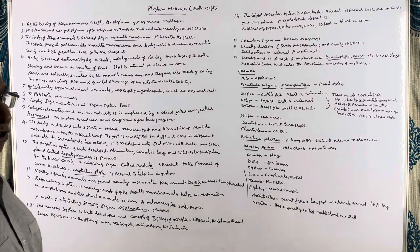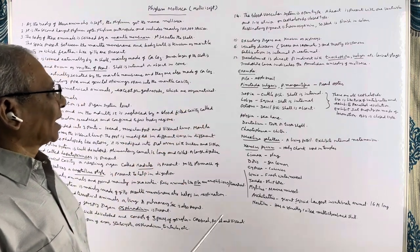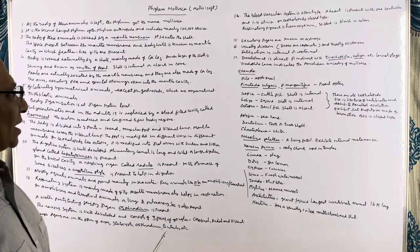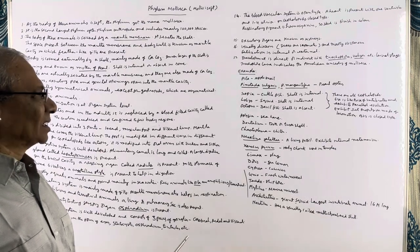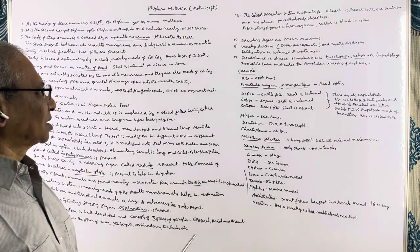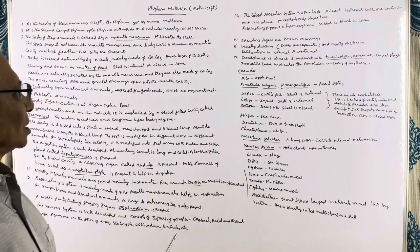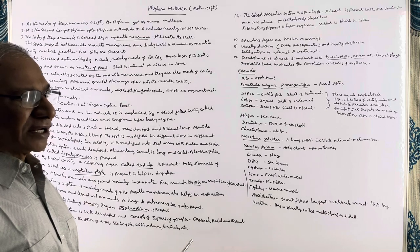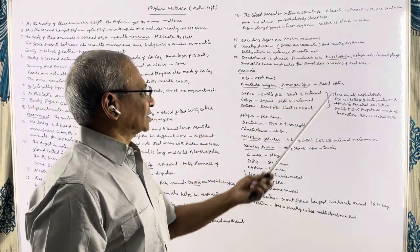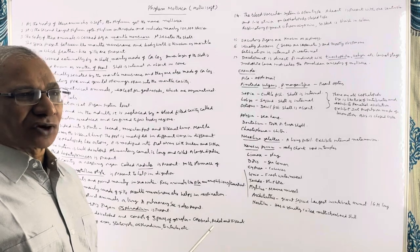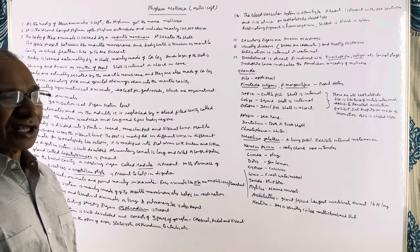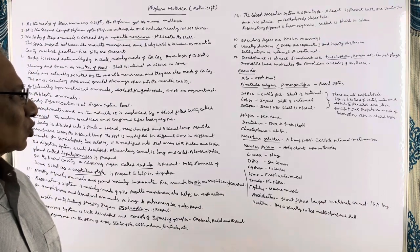The excretory organs of mollusks are known as kidneys, and the nitrogenous waste product is mainly urea. Mollusks are generally dioecious, meaning sexes are separate, and fertilization is mostly internal, though in some animals it may be external. Development is direct or indirect. In indirect development, trochophore larval and veliger larval stages appear. The presence of a trochophore larva indicates that molluscans have originated from phylum Annelida, as trochophore larval stages are found in both phyla.